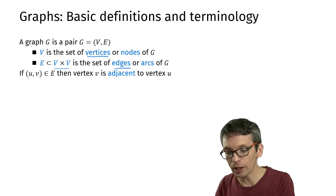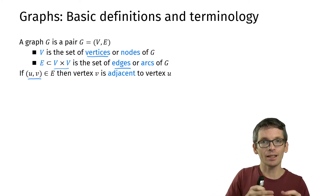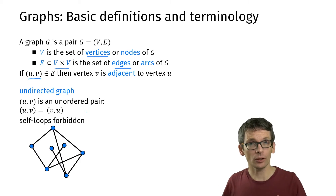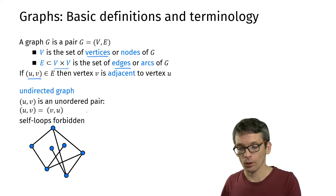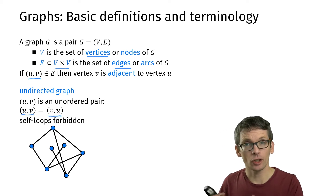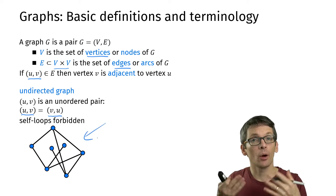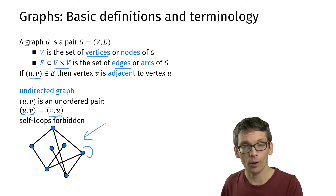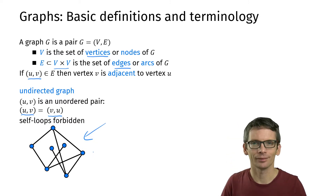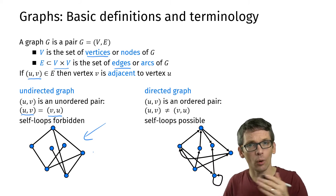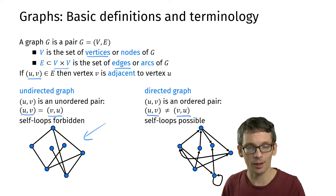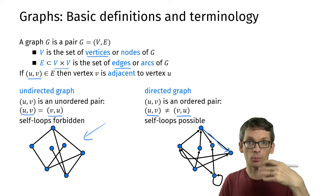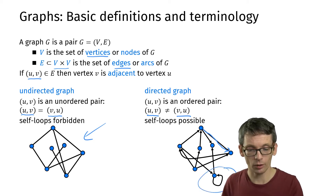If we have an edge (u, v), then we say v is adjacent to u. In general we distinguish two types of graphs: undirected graphs and directed graphs. In an undirected graph, edges are unordered pairs, so the edge (u, v) is the same as (v, u). Undirected graphs typically do not allow self-loops. In a directed graph, edges are ordered pairs, so (u, v) is not the same as (v, u), and we draw an arrow pointing towards v. In directed graphs we also allow self-loops.